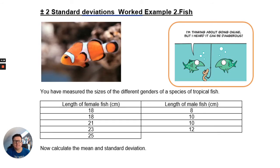Here's a worked example of a clownfish. Ignore the joke. It's not a very good joke. So you've measured the size of the different genders of a species of tropical fish. So we've got length of female fish and length of male fish. And we're going to calculate the mean and standard deviation again. So you could do that with a calculator. So, again, check out my video on how to do it on a ClassWiz, Casio ClassWiz calculator.